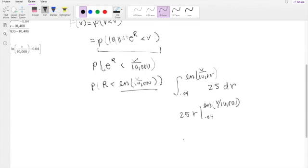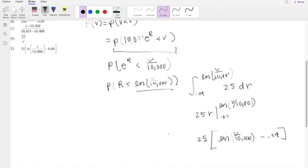So then when I plug in the upper limit, you get this is equal to natural log of V over 10,000. When you plug in the lower limit, you just get 0.04. And then this actually is our answer, E.